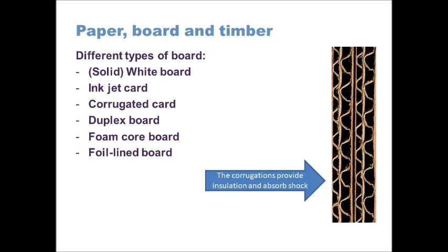Foam core board is commonly used in your department for modeling, particularly architectural models, because of its structure and good quality surface finish. It has a characteristic white, slightly shiny or satin surface on the outside, and on the inside there is an aerated polymer foam, which gives it a slightly squidgy characteristic and provides thickness and structural rigidity for making model walls. Other advantages include that it takes paint and media quite well, so you can add graphics, windows, and doors to make architectural models look more realistic.